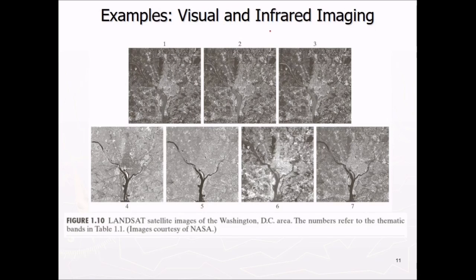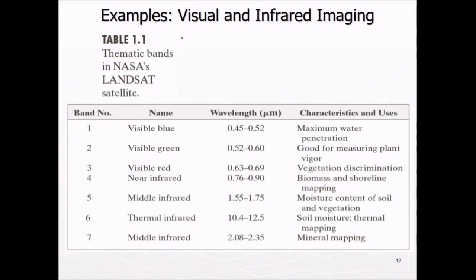This is our visual and infrared imaging. These are the Landsat satellite image of the Washington DC area. And these are the numbers which refer to the thematic bands. That is band number 1 to 7 of Landsat. Visual and infrared imaging if we talk about this thematic band in Landsat satellite, these are from 1 to 7. And we have this in visible blue that is 0.45 to 0.52. So 0.45 to 0.52 actually they are visible range.